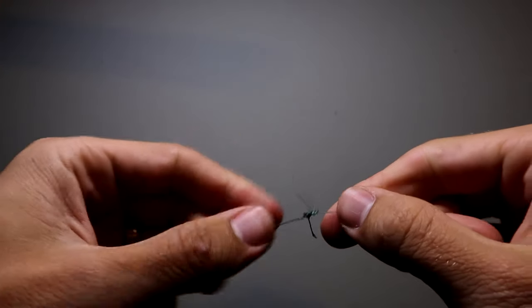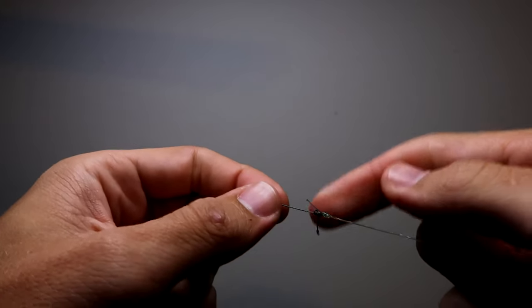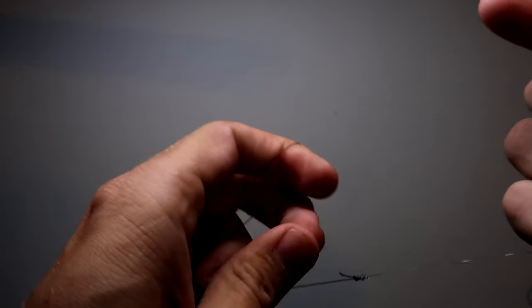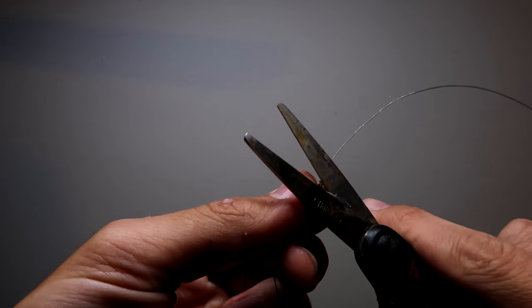And there you go. We got your clinch knot on one side, improved clinch knot on the other side. You can do both, you can do clinch-clinch, improved-improved, it doesn't matter. It should hold just the same. I like to do the improved with the braided line just because the braided line is typically a little bit more slick. So I'm going to cut off my tag ends here.